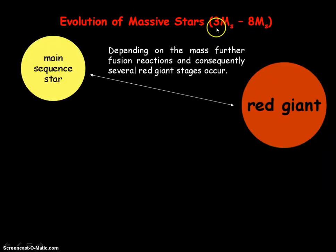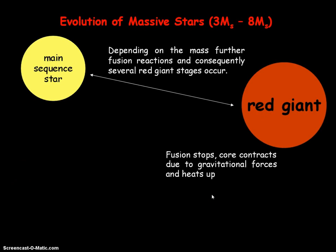For stars between three and eight solar masses (where solar mass M☉ is the mass of our Sun), they have large enough mass so that their cores can reach higher temperatures to allow further fusion reactions — for example, fusion of helium to carbon, then carbon to neon, neon to oxygen, and so on. These stars can have many main sequence and red giant stages, but eventually when fusion stops, we're left with a white dwarf.